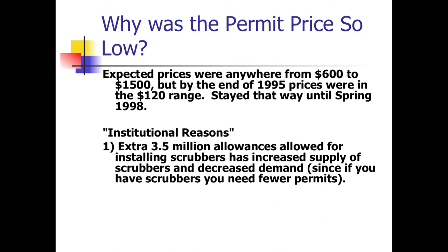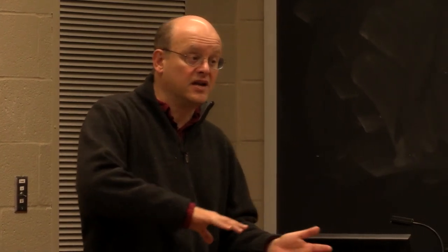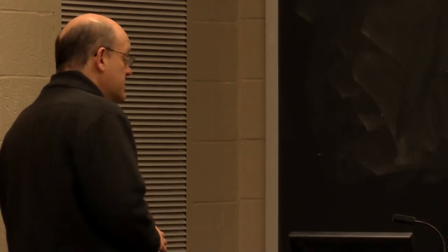One of the questions Burtraw deals with is why the price was so low. Well, one reason is we had to pay off Senator Byrd — they allocated 3.5 million extra permits, on a total of maybe 15 or 16 million. Then more plants put in scrubbers, which increased supply and reduced demand, so that's going to lower the price.